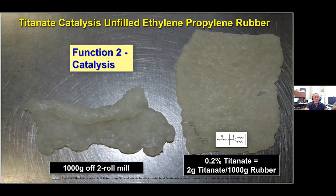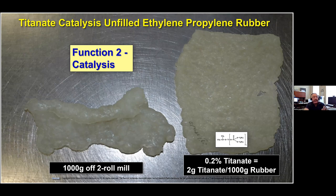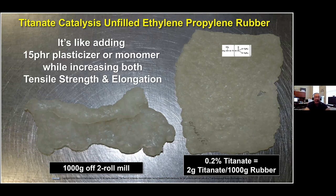A simple test: you take Vistalon 404 ethylene propylene rubber, throw it on a three-roll mill, 1,000 grams. The unfilled EPR pulls together — it's got nerve. You put in two parts per thousand of a phosphatotitanate and it's like adding 15 parts of ordinary plasticizer. In a flexible vinyl system, one drum of titanate will replace 90 drums of conventional plasticizer. I know this sounds incredible, but it's true — it's the same kind of claims graphene people make. We have the same issues where we say we'll replace 15 parts of plasticizer with two parts per thousand of titanate.